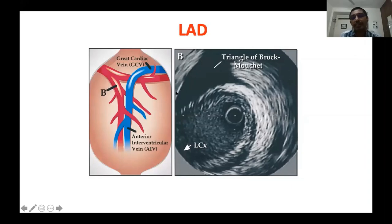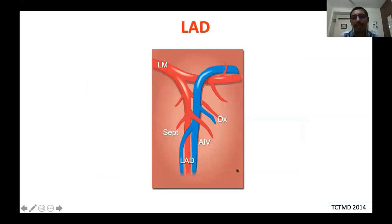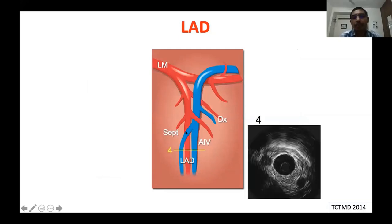The reflection of the great cardiac vein from the anterior interventricular groove into the left atrioventricular groove forms a triangular pericardial space called the Triangle of Bromann — named after the anatomists who identified it. This triangle defines the ostial part of the LAD. Here you can see the LCX and LAD and this pericardial space — the Triangle of Bromann — which is a constant landmark for the ostial part of the LAD.